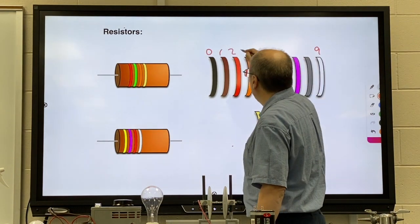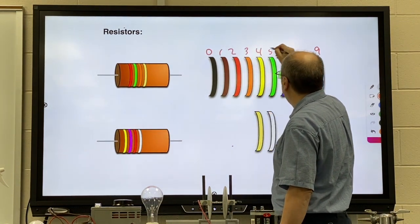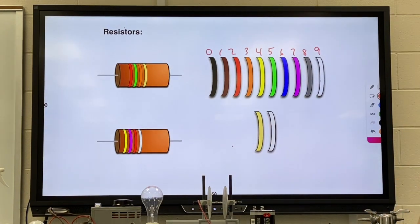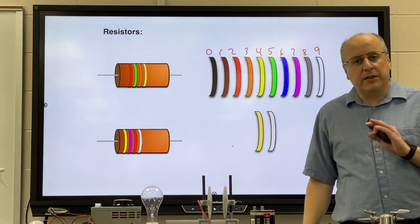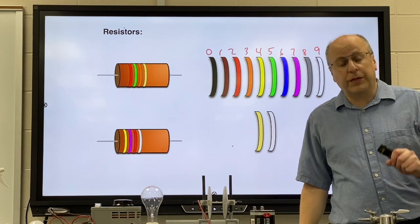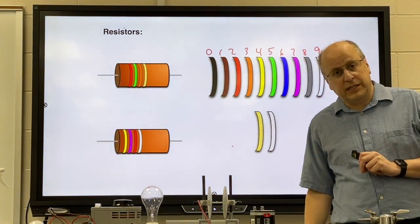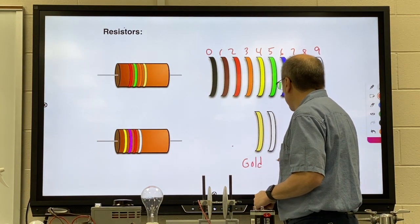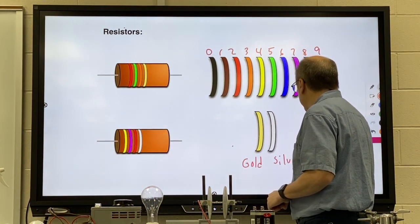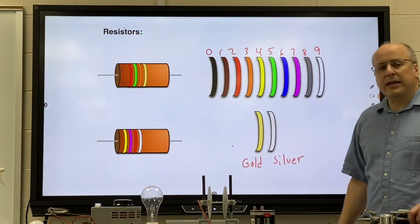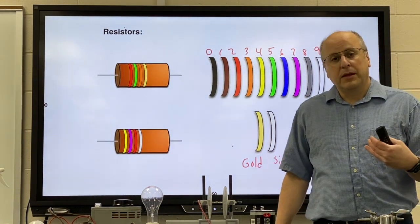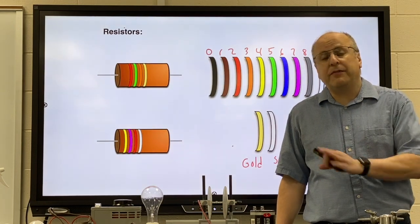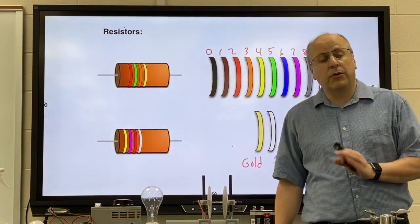They're going to go one, two, three, four, five, six, seven, eight, and nine. Now I said there were ten different colors and that is true for the first three stripes on your resistor. The fourth stripe will either be gold or silver. You're going to say how can I tell them from yellow and white? Well the fourth band will never have yellow or white. It'll be gold or it will be silver.